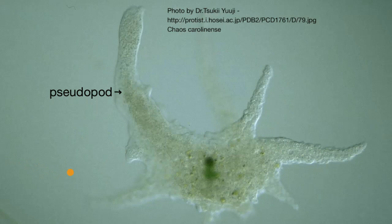The goal of this video is to appreciate some of the structures that you see even in unicellular organisms. This right over here is a picture of the amoeba Chaos carolinensis. What you see here is a projection coming off from the main part of the cell, and this is called a pseudopod, referring to it being a false foot.